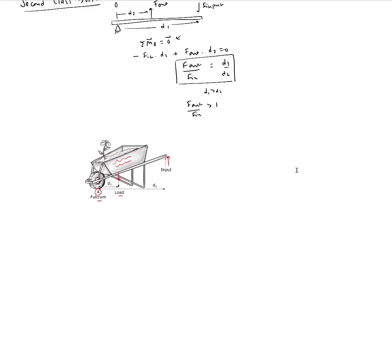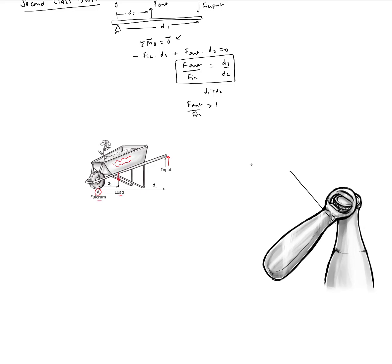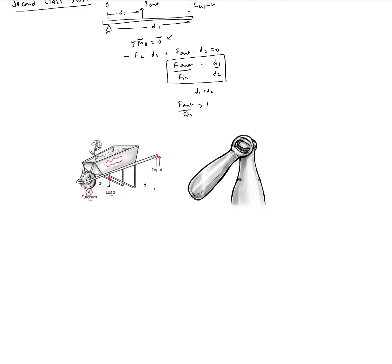Another example of a second class lever is a bottle opener. The input force is where you push it up, the output force is where it contacts the bottle cap, and the fulcrum is the resting point on the bottle rim. Because the output is between the fulcrum and the input, this is a second class lever with force advantage.